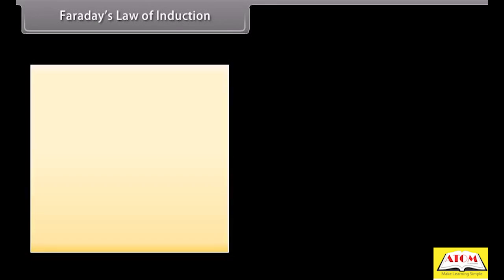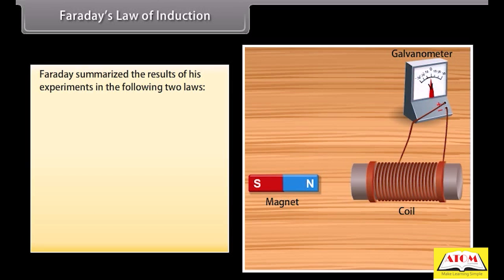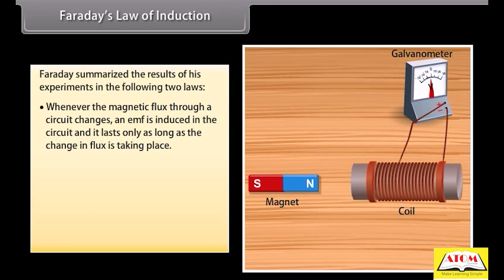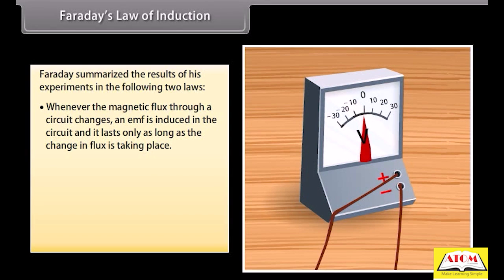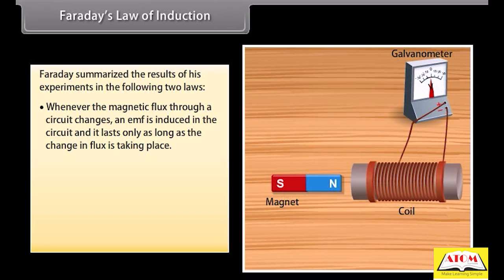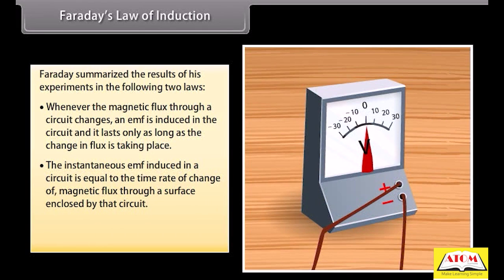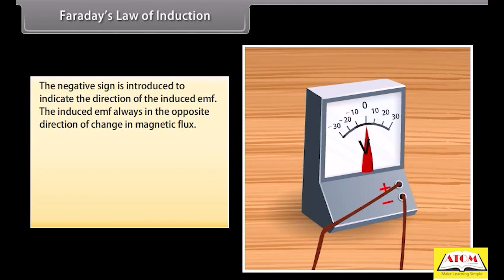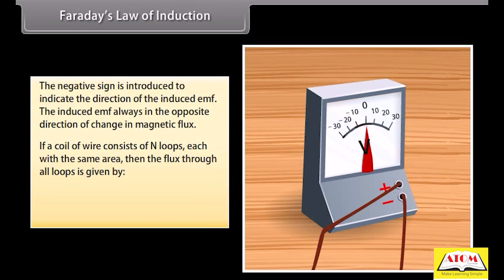Faraday's law of induction. Faraday summarized his experiments in two laws. Whenever the magnetic flux through a circuit changes, an EMF is induced in the circuit and it lasts only as long as the change in flux is taking place. The instantaneous EMF induced is equal to the time rate of change of magnetic flux: E equals minus d(phi_B)/dt. The negative sign indicates the direction of the induced EMF, which always opposes the change in magnetic flux. For a coil of N loops, the EMF is minus N times d(phi_B)/dt.